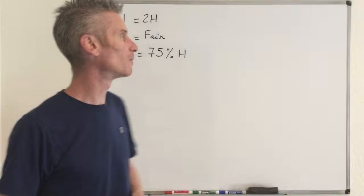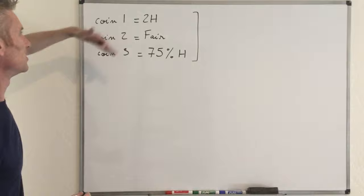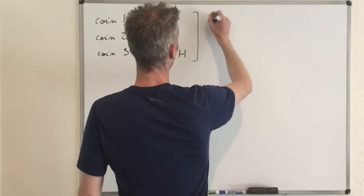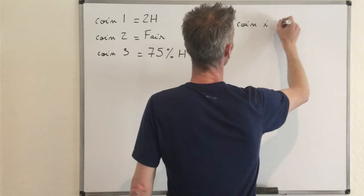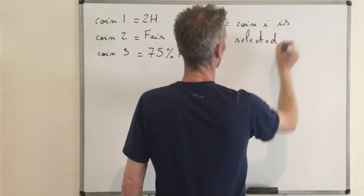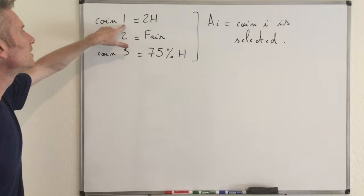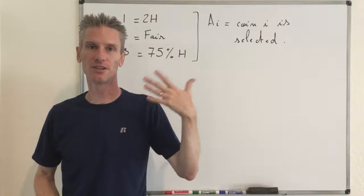You choose one of those three coins at random. The question is: what is the probability that you selected coin one? I'm going to call that event A1 for the two-headed coin. So the goal is to compute the probability that we got coin one in the first place, given that after flipping the coin, we see heads. I'll write this event as H.